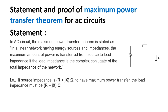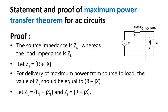As we know, in an AC circuit, impedance is a combination of resistances and reactances. Here R represents the resistance and Jx represents the reactance. Let us represent the source impedance as Zs and the load impedance as Zl. Let Zs equal R plus Jx. In the circuit shown, for the delivery of maximum power from source to load, the value of Zl, that is the load impedance, should be equal to R minus Jx, which is the complex conjugate of the source impedance.